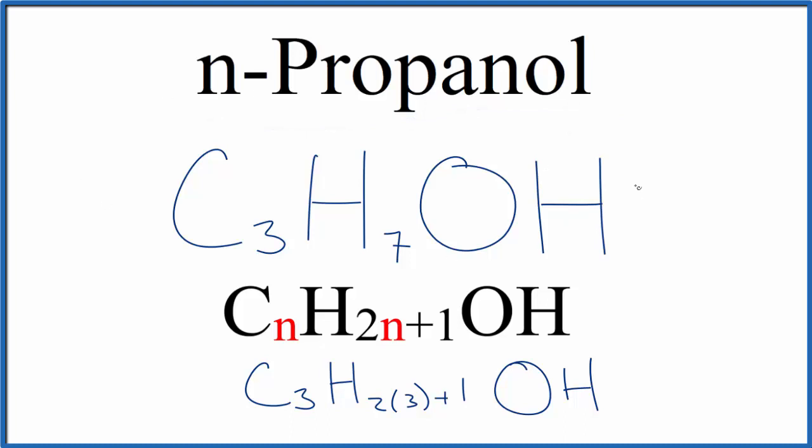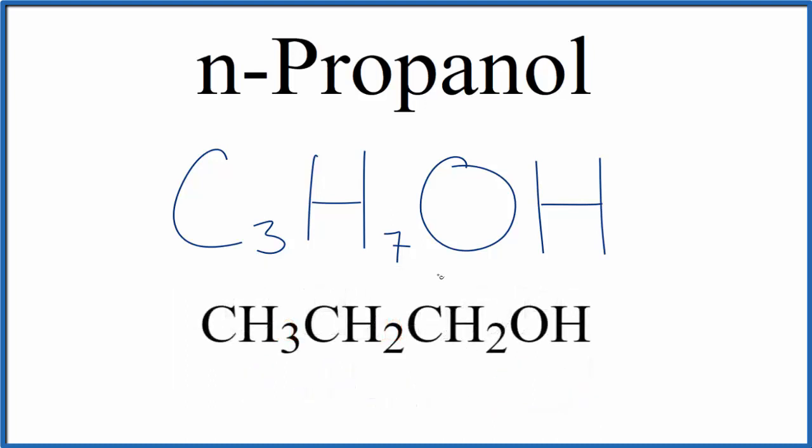Note that this would also be the formula for 2-propanol, so sometimes you'll see the formula written like this. Same number of atoms, just arranged a little differently, and we're showing that this OH group here is on the end, it's not in the middle. So that's the chemical formula for n-propanol.